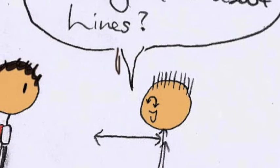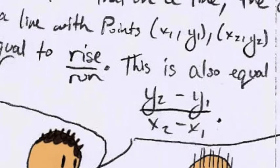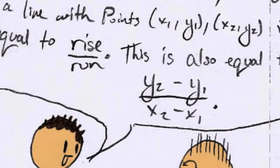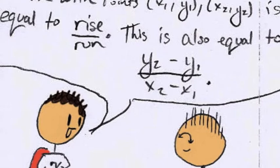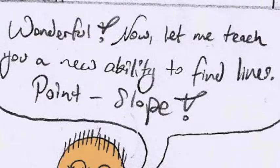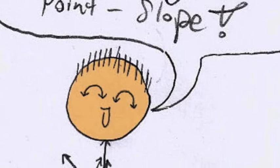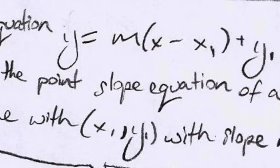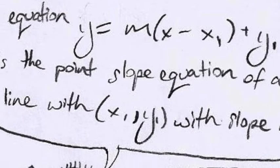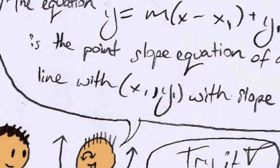I know that on a line, the slope of a line with points, x1 and y1, and x2 and y2, is equal to rise over run. This is also equal to y2 minus y1 over x2 minus x1. Wonderful! Now let me teach you a new ability to find lines, point slope. The equation y equals m, x minus x1 plus y1, is the point-slope equation of a line with x1 and y1 with slope m. Try it!